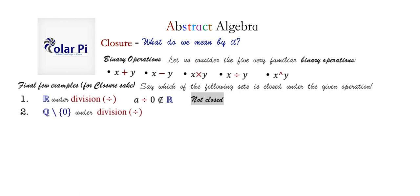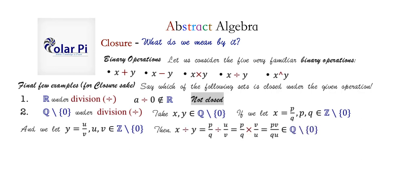So not closed. And if we take the set of rational numbers without 0, so if we leave out 0 and just consider the set of rational numbers under division, then we see that for any x, y in the set of rational numbers without 0, we can say that x is p over q where p and q are in the integers without 0. And we can say similarly that y is some u over v where u and v are in the integers without 0. So then we see that x divided by y is going to result in this here. And notice that p times v is an integer not 0, and q times u is an integer not 0. So pv over qu is in the rationals without 0. And so we see that under division, the rationals without 0 are closed.